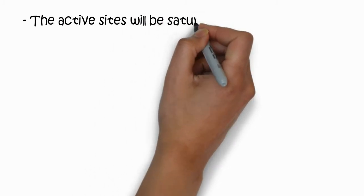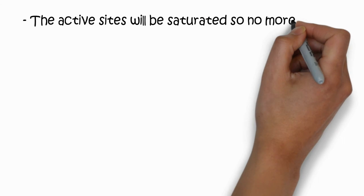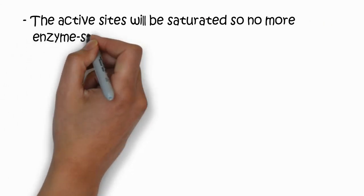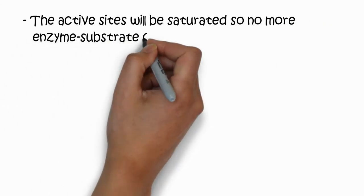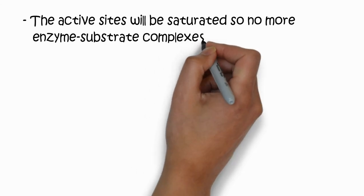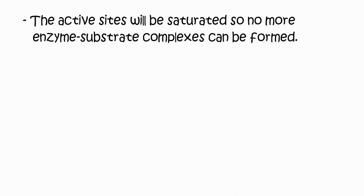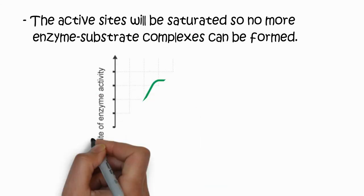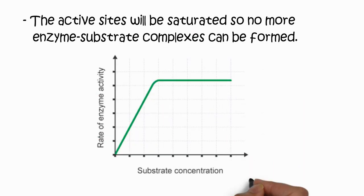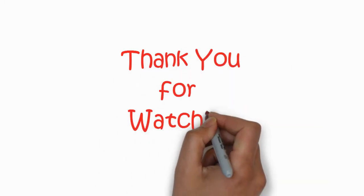Increasing the substrate concentration yet further will have no effect because the active sites in this case will be saturated, so no more enzyme-substrate complex can be formed. You can see in this picture the rate of the enzyme activity initially increases up to a certain limit, and then the enzyme concentration becomes the limiting factor, so the activity is then constant.